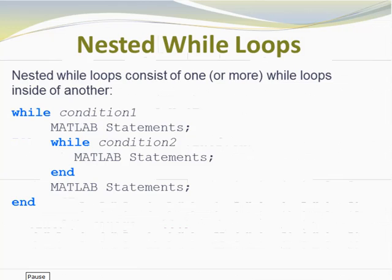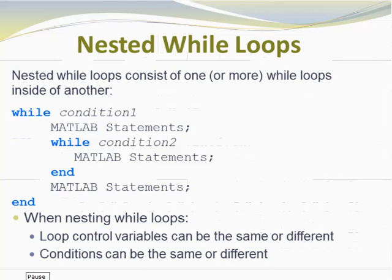Just like we have nested for-loops, you can also have nested while-loops. The structure looks pretty much the same, except instead of for-loops we have while-loops, and instead of counters we have conditional statements. We have while condition one, with some MATLAB statements inside, and then a second while-loop inside the outer while-loop with its own separate condition. When nesting while-loops, the loop control variables used in your conditions can be the same or different — for instance, you might have an error condition that causes both loops to exit simultaneously. In most cases the conditions will be slightly different but may share similarities.